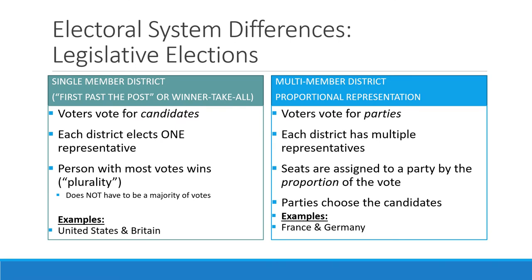There are two different electoral systems that democracies can choose from. The first is called the single-member district winner-take-all system. The British call it the first past the post system. In this system, voters vote for a candidate, and each district has a number of candidates competing for one seat, and the person who gets the most votes wins.